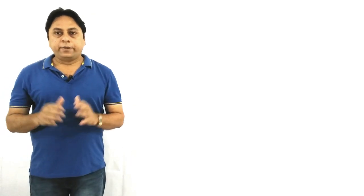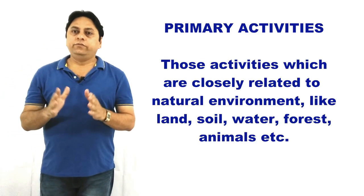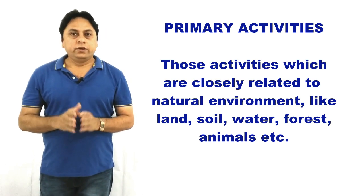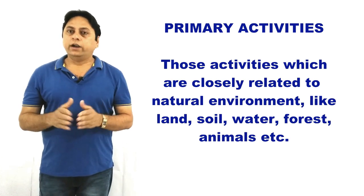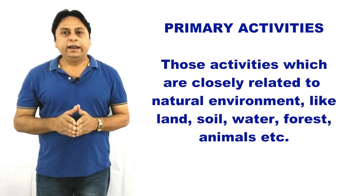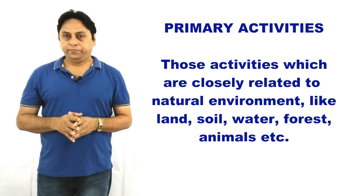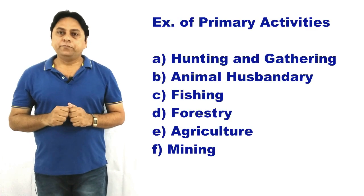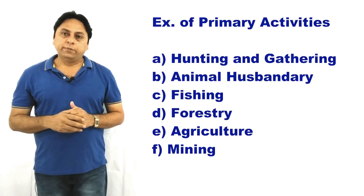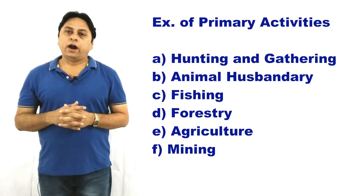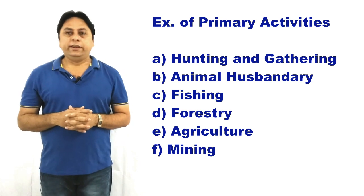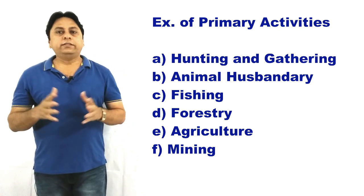Let's concentrate first on the meaning of primary activities. Primary activities means those activities which are related to the natural environment, which have a close relation with land, water, forest, wildlife, soil, etc. The examples of primary activities are hunting and gathering, rearing of animals (animal husbandry), fishing, forestry, agriculture and farming, and mining and quarrying.